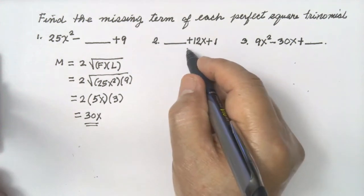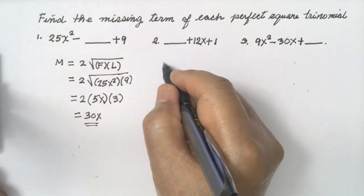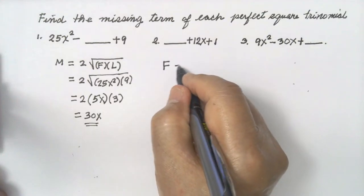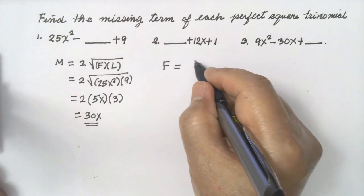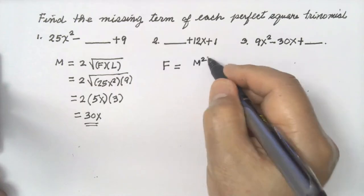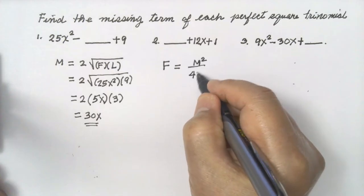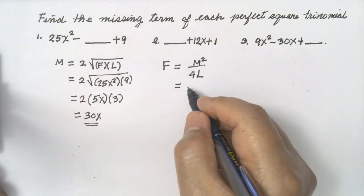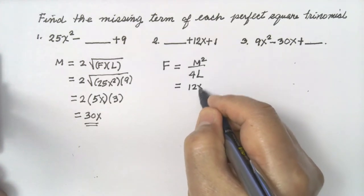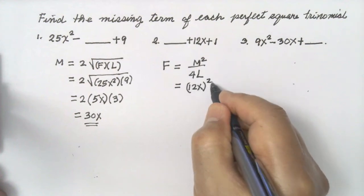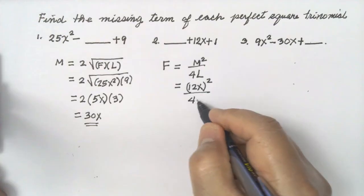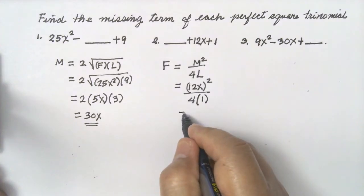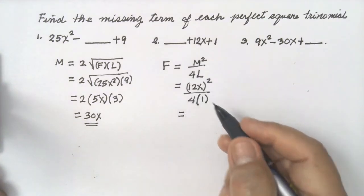Number two: the missing term is the first term. The formula is: first term equals the square of the middle term over four times the last term. Substituting: the middle term is 12x, so write (12x)² over four times the last term, which is 1.